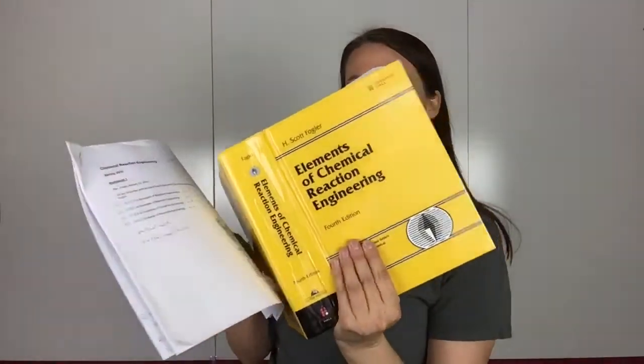I wanted to go over problem 2.7. This was from homework 1. This is a book problem from Elements of Chemical Reaction Engineering, the fourth edition. It says the exothermic reaction A to B plus C was carried out adiabatically and the following data recorded. It gives you some data for X, the conversion, and the rate that they recorded for each conversion. And then it has a few parts.